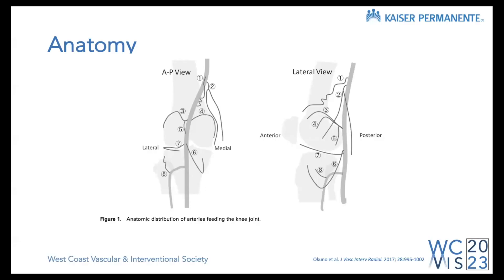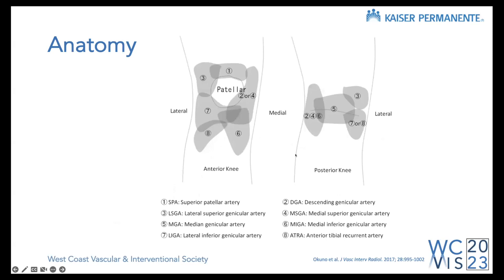Once you decide on genicular artery embolization, having thorough knowledge of the knee joint anatomy and arterial supply is key. The main arteries targeted include the descending genicular for the medial joint, the superior and inferior medial geniculars, the superior and inferior lateral geniculars, and the recurrent anterior tibial artery. There can also be some anterior joint supply. Using those combinations and knowing where the patient's pain is, I target those arteries accordingly.